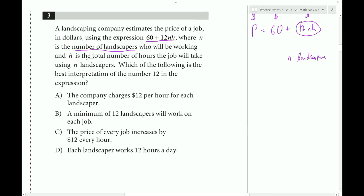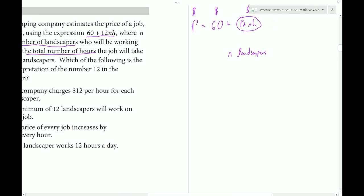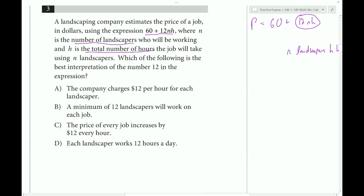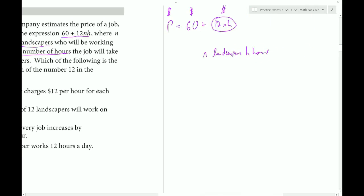N is the number of landscapers, and H is the total number of hours the job will take, so H is in hours. The question asks for the best interpretation of the number 12 in the expression. The number 12 has certain units which we don't know, so let's call it units for now.